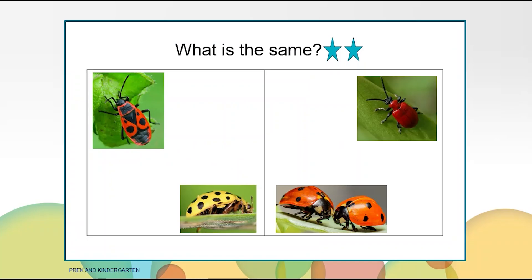Before we get started, let's get our math brains warmed up by looking at these pictures. What is the same in both boxes? It is the same because both sides have bugs. It is the same because both sides have a red bug on top.